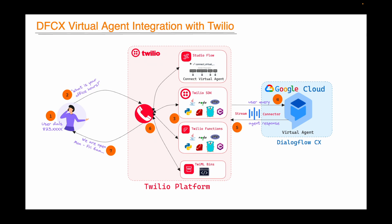This means we need to have a virtual agent built in DialogPro CX. Then we create a stream connector to bridge between Twilio and the agent. After that, we can use one of the Twilio tools like Studio, SDK, function, or TwiMLbin, in which we use this connector for connecting to the virtual agent. Finally, we map this flow or TwiMLbin or function or webhook to the Twilio provided phone number.